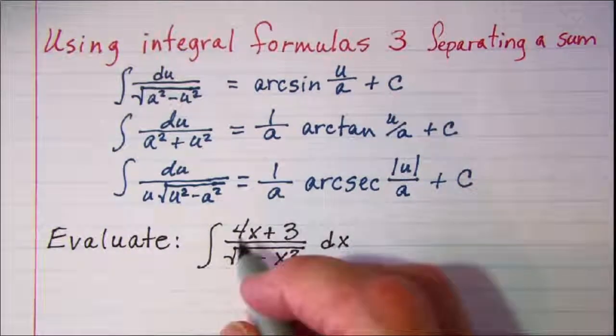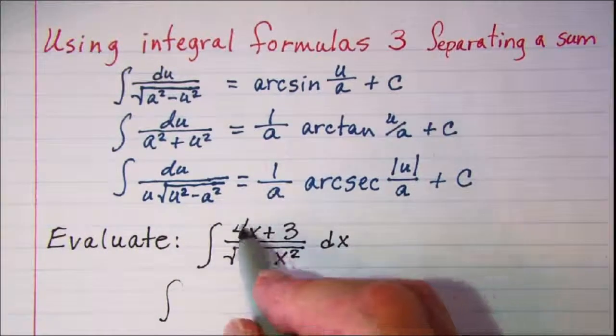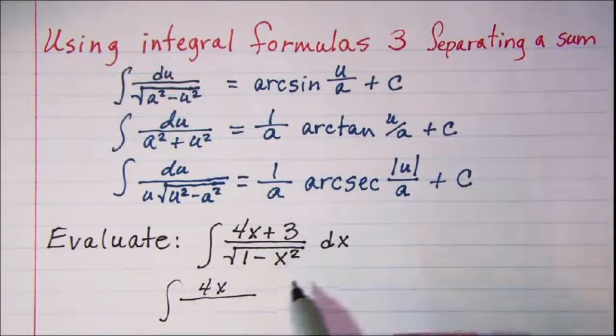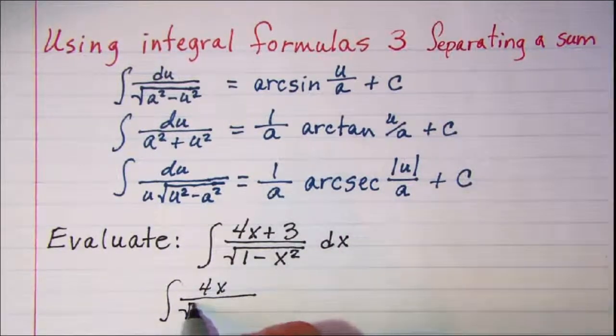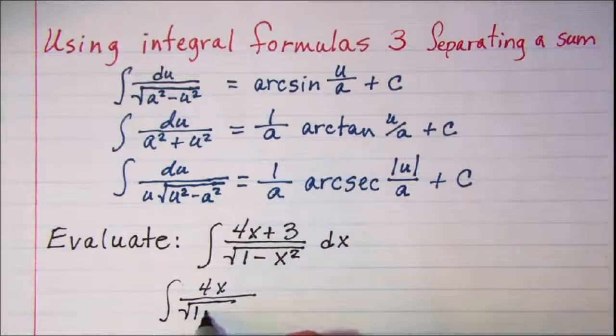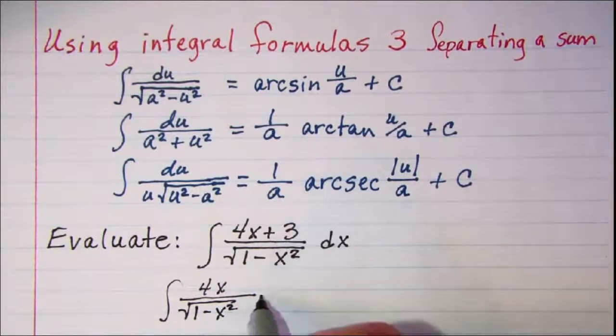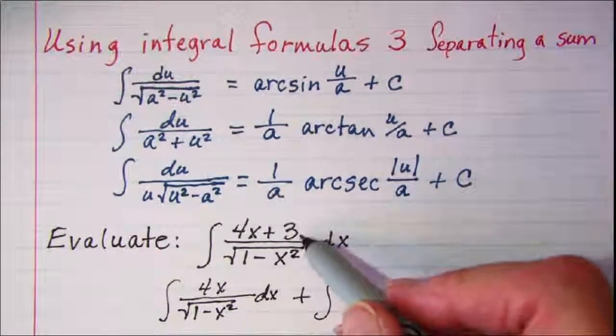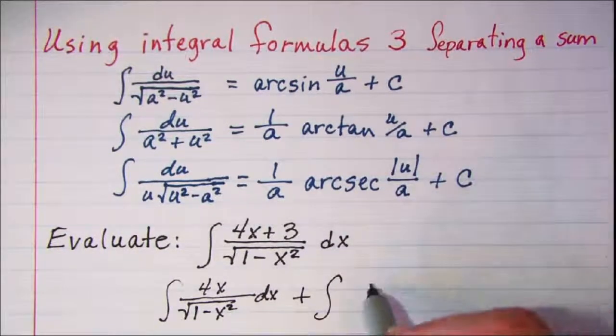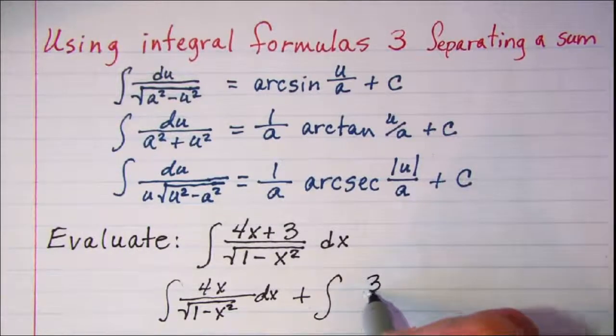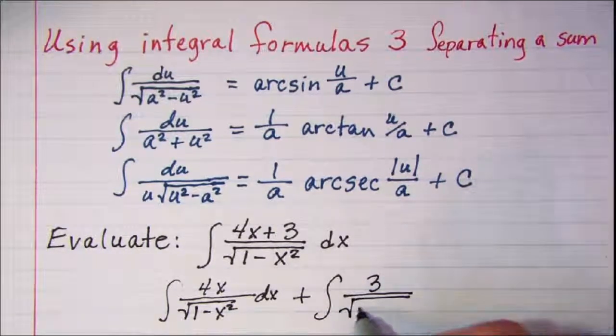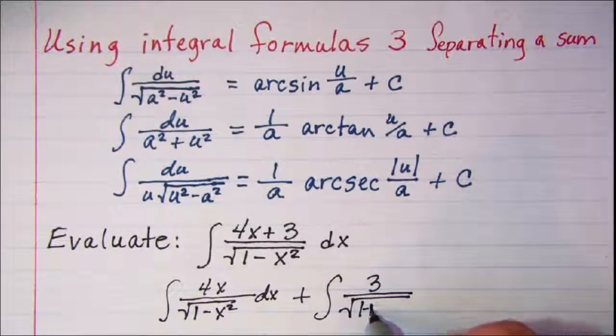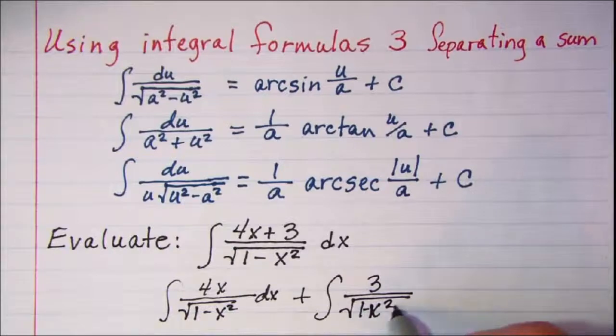Let's do that first. I'll have just 4x in my first one in the numerator, so I have 4x divided by the radical 1 minus x squared dx, and then plus, and then my second integral, I have a 3 in the numerator, and then square root of 1 minus x squared dx.